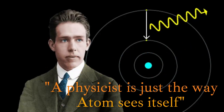Today we talk about world famous scientists. The story of Niels Bohr, whose full name is Niels Hendrik David Bohr. Bohr was born in Copenhagen, Denmark, on October 7, 1885, and died in Copenhagen, Denmark, on November 18, 1962. Niels Bohr was a physicist born on October 7, 1885, in Copenhagen, Denmark.